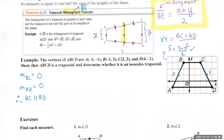The other part is showing it's an isosceles trapezoid. We'd have to show the two legs are congruent — prove AB is congruent to CD. You can use the distance formula or picture the triangle and use the Pythagorean theorem, which is essentially the distance formula. Let's find the length of AB: the change in y squared plus the change in x squared.